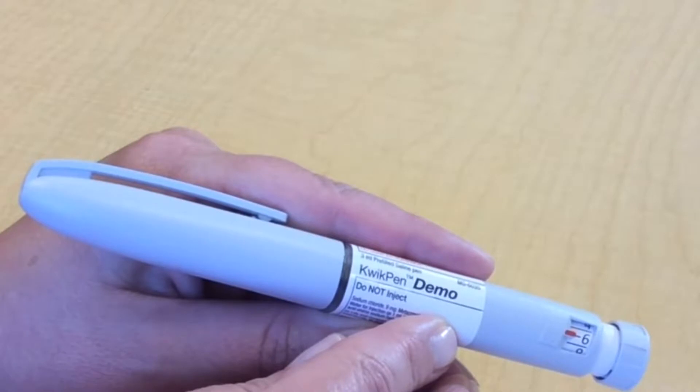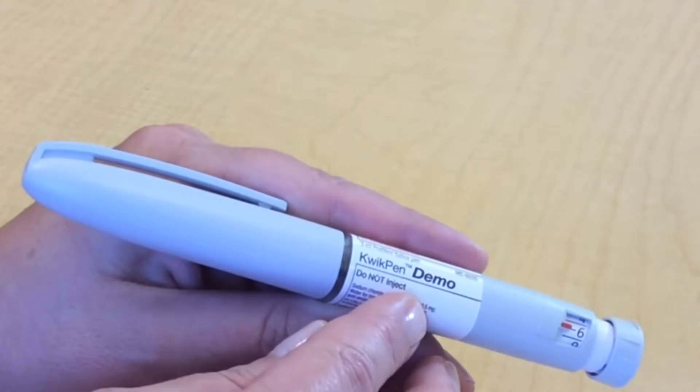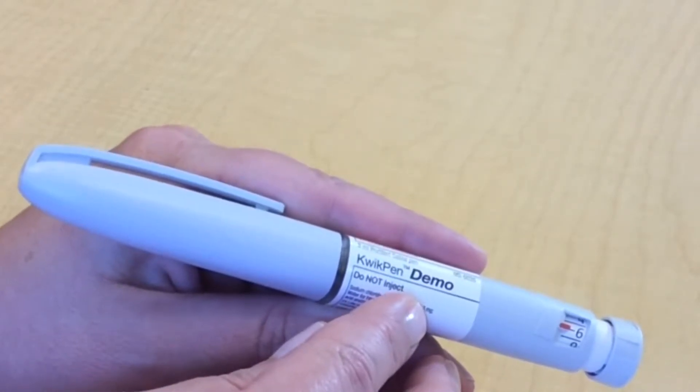Before you attach the needle, it's important to inspect your insulin to make sure it is safe to inject. Look at your insulin pen. Check the label to make sure that it's the type of insulin you should be using and that the insulin is not expired.